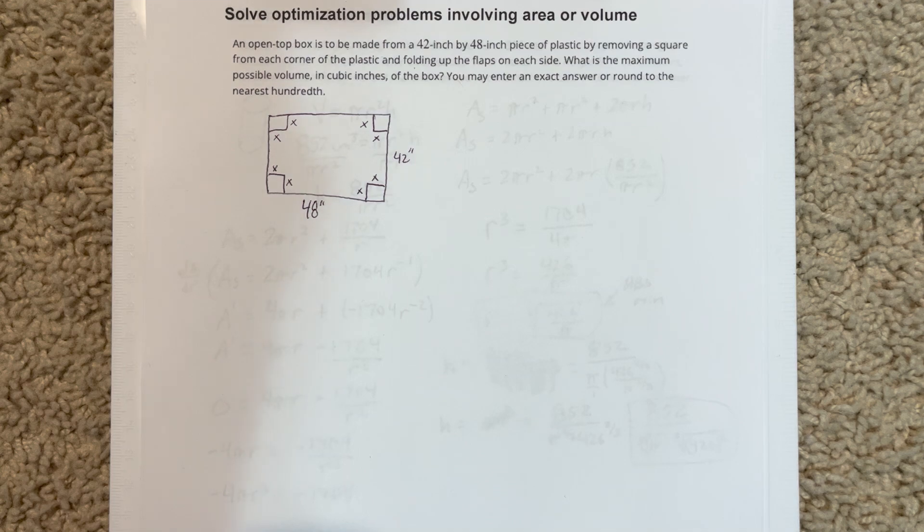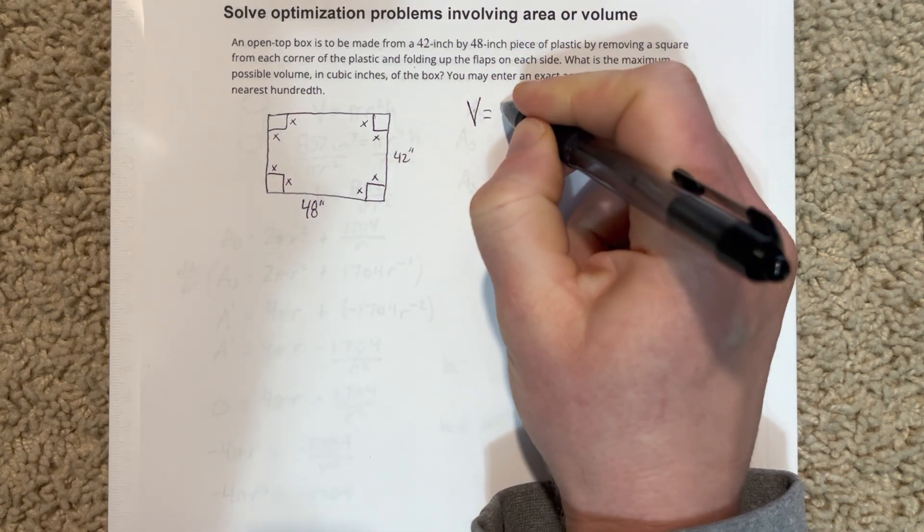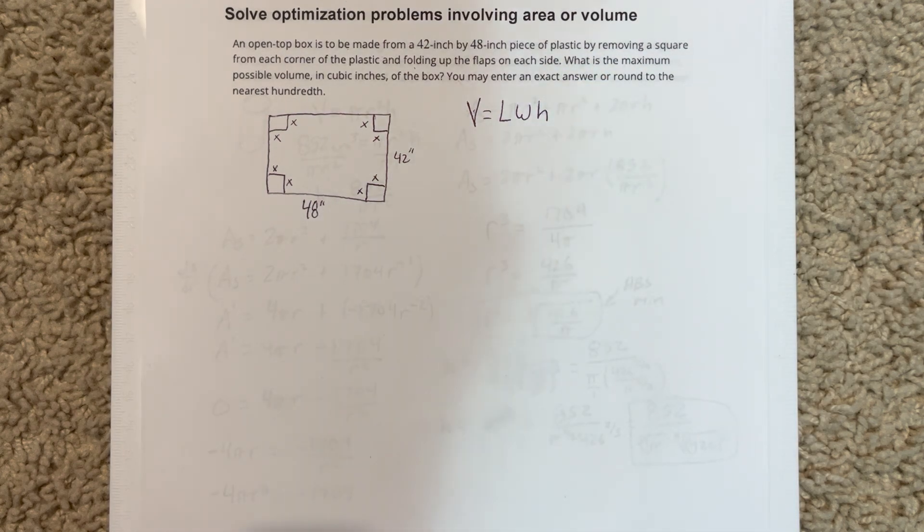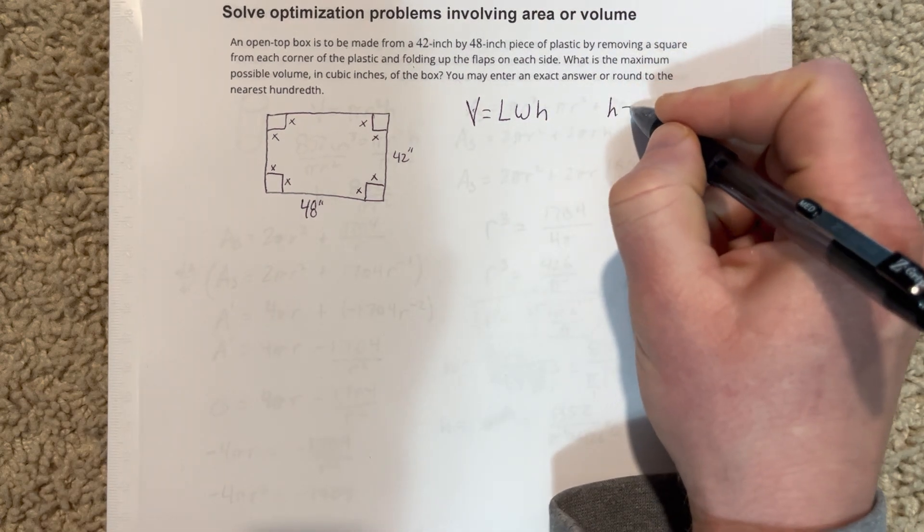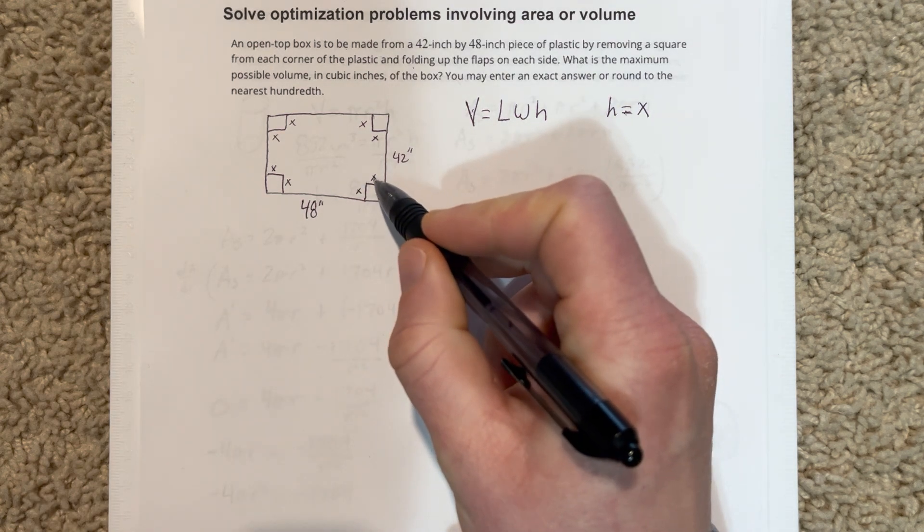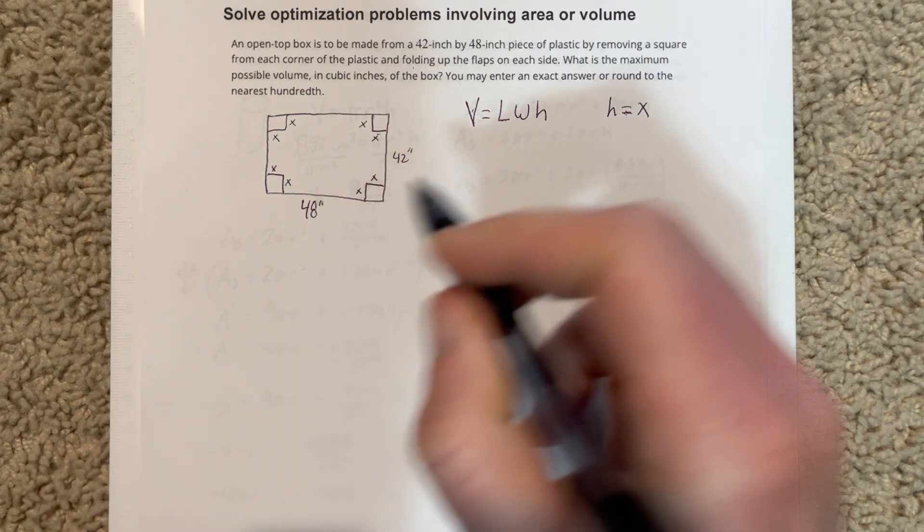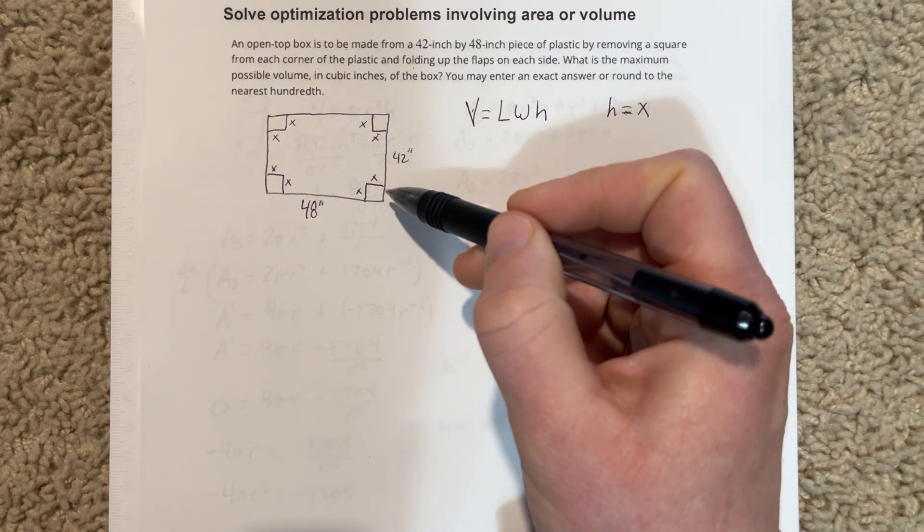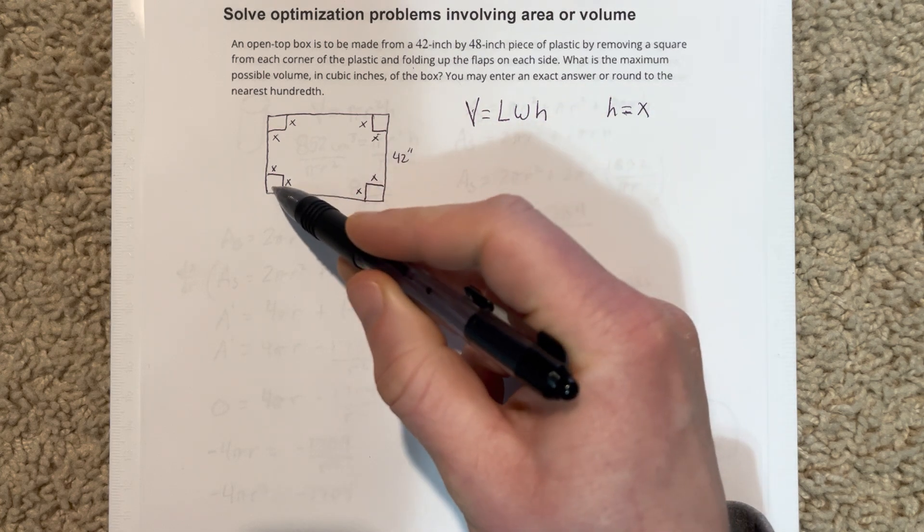So to do that, we're going to start by using the volume equation. The volume equation for a box is length times width times height. Now we're going to do some substituting in here for this equation. So our height here is X. We can write that here. H is going to be X. You can see that when you fold it up, this would be the height of the box.